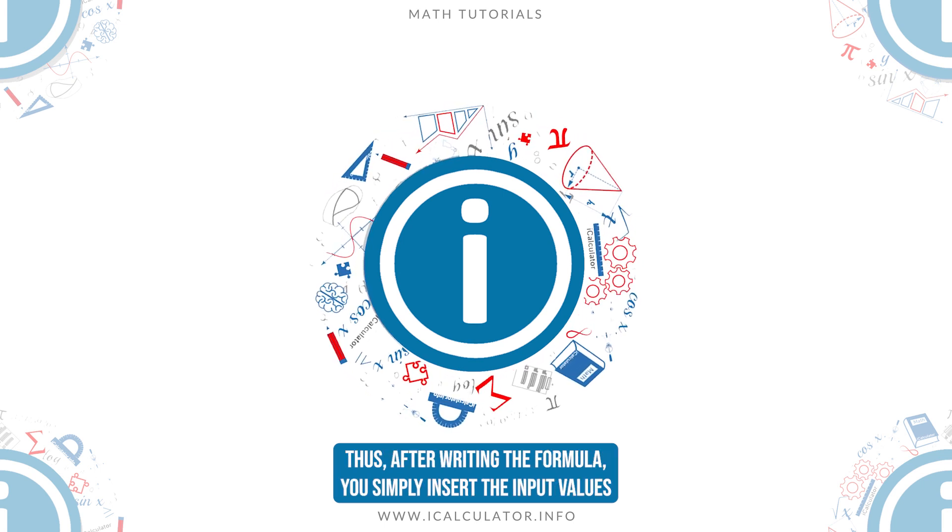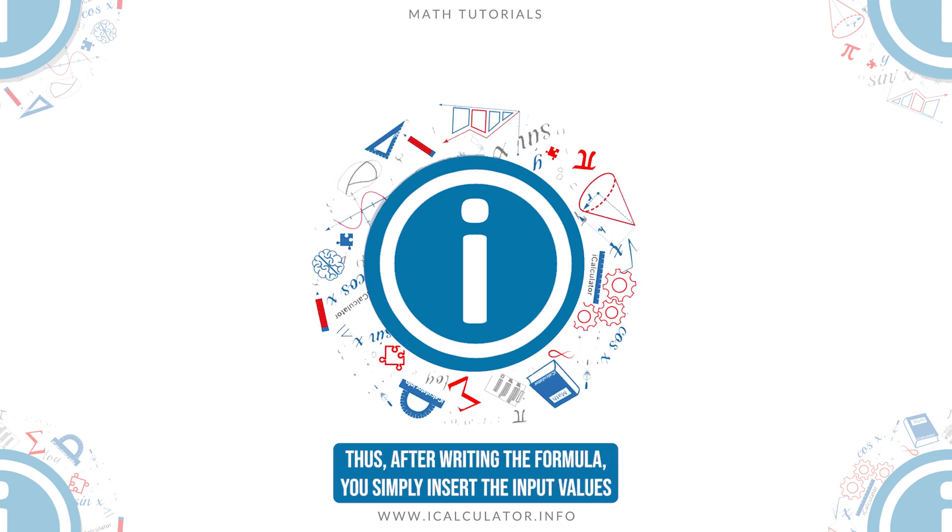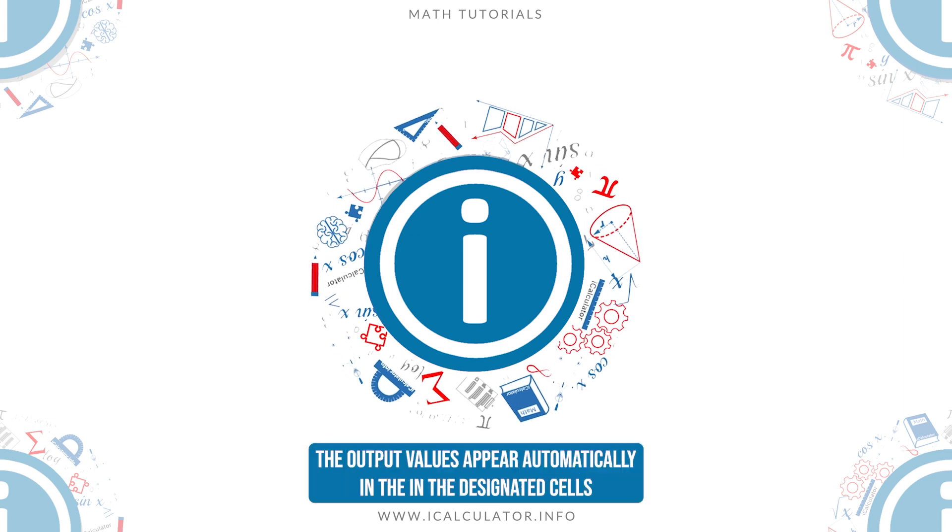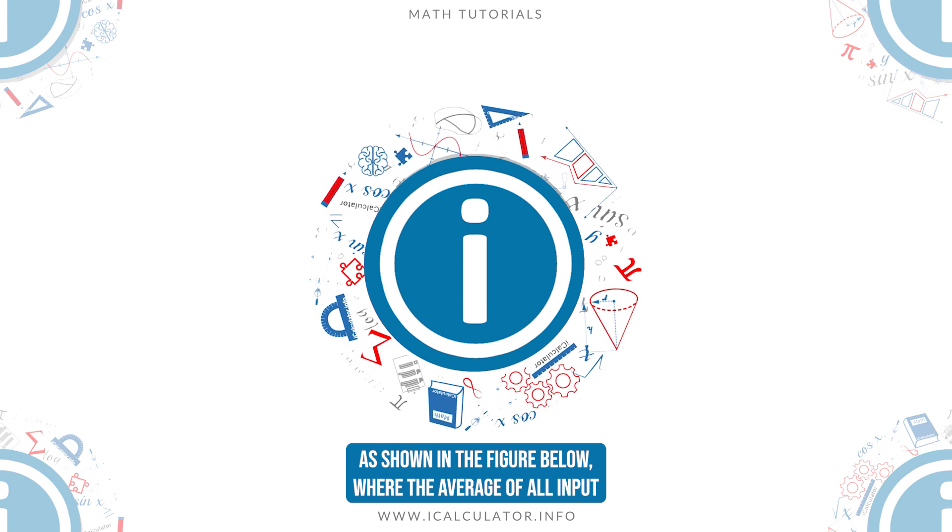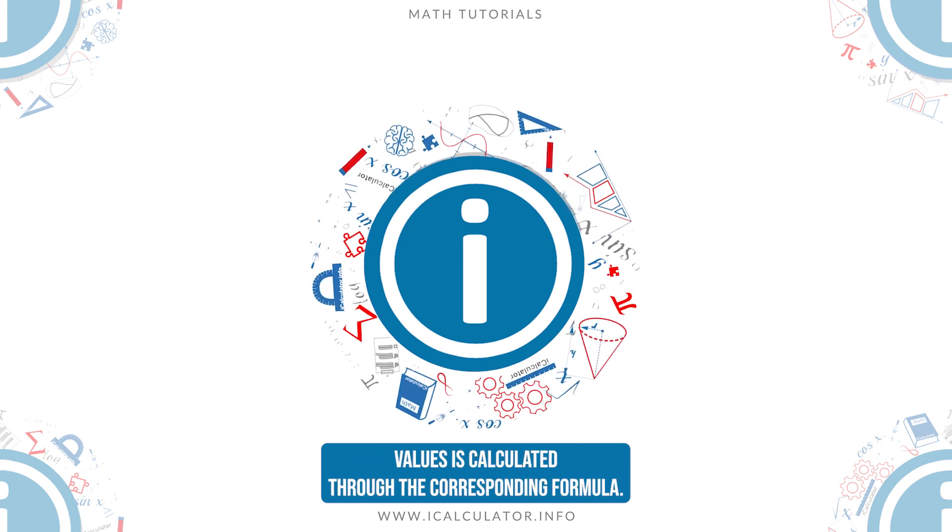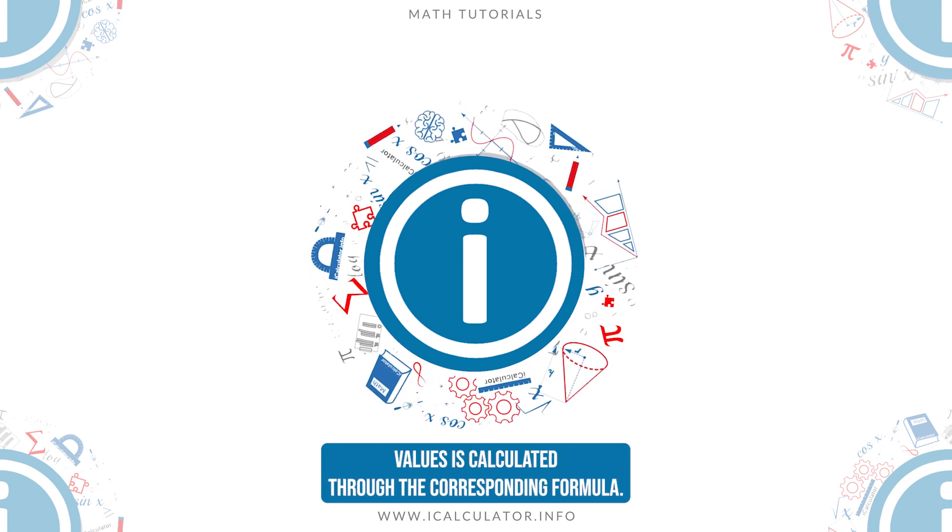Thus, after writing the formula, you simply insert the input values and as a result, the output values appear automatically in the designated cells as shown in the figure below, where the average of all input values is calculated through the corresponding formula.